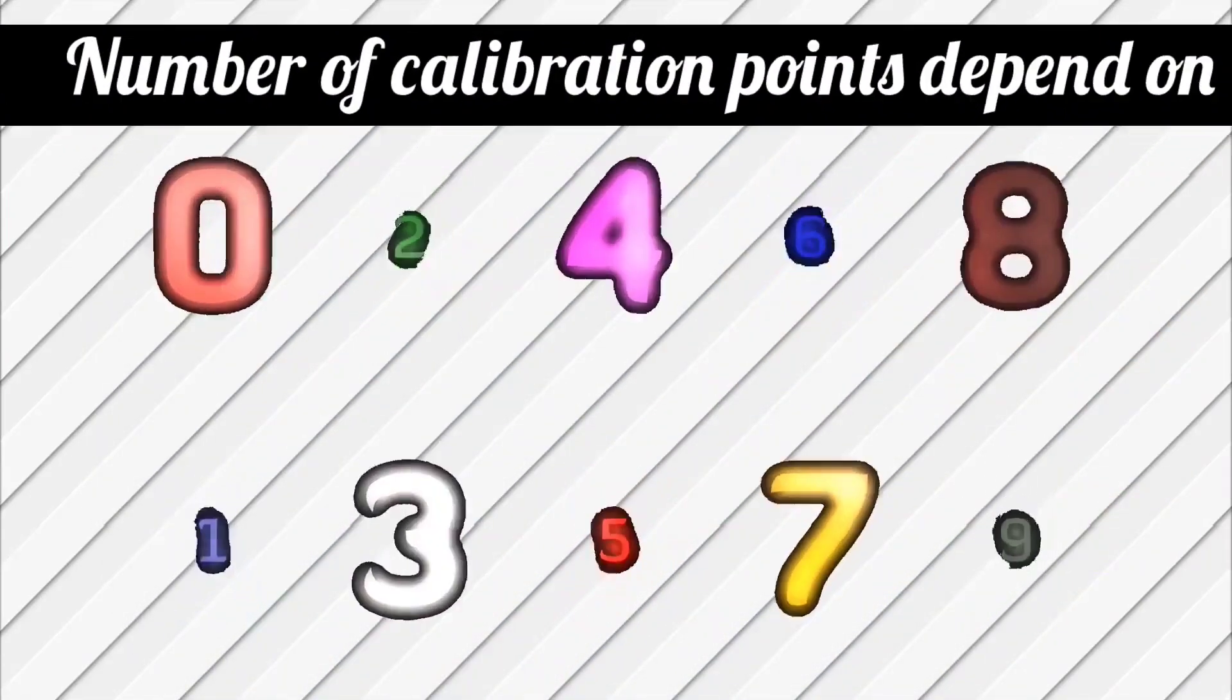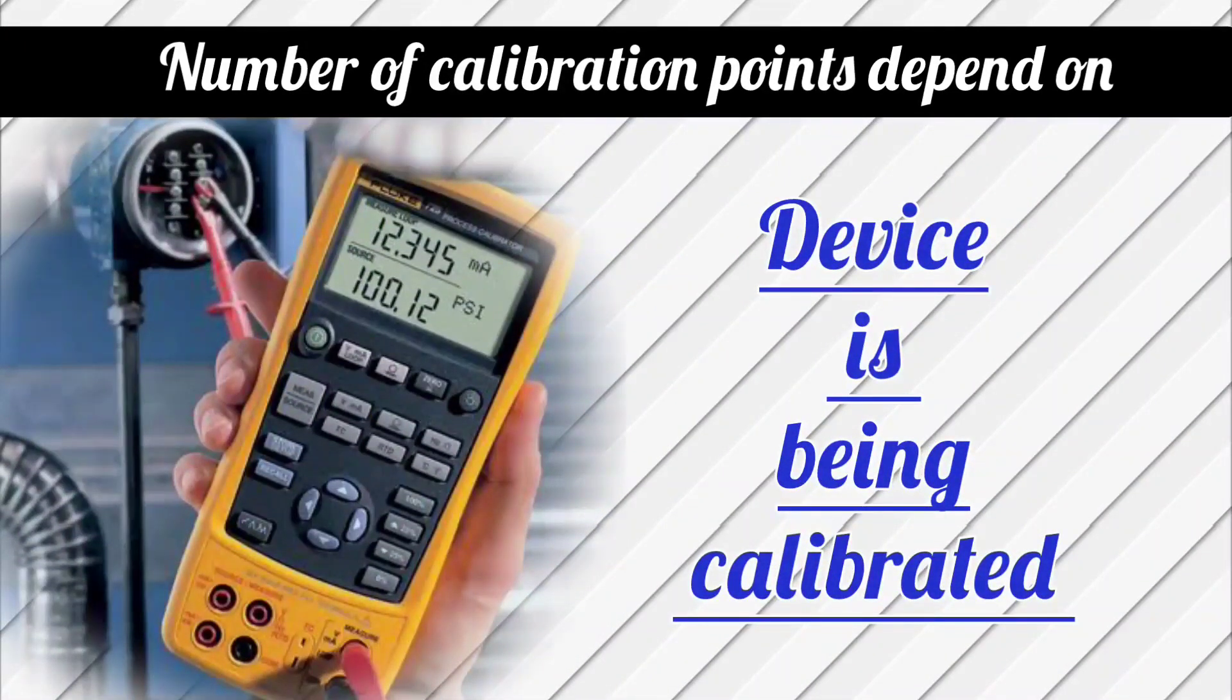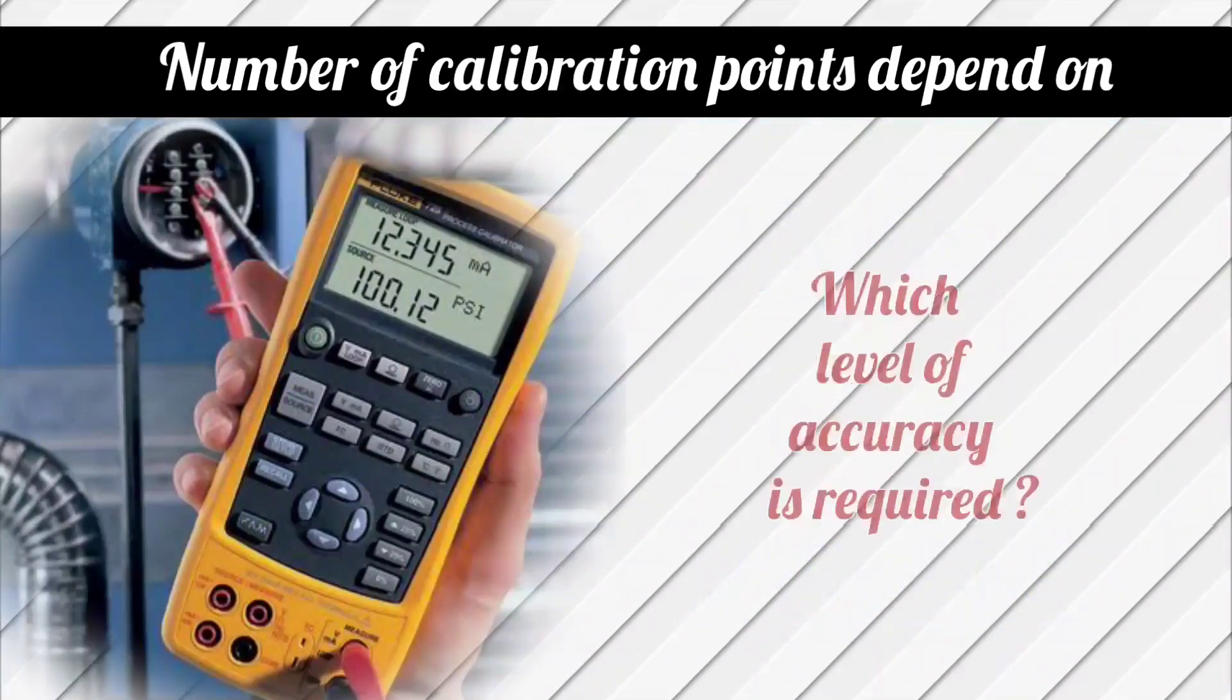Number of calibration points depend on the device being calibrated with Hart communicator and depend on which level of accuracy is required.